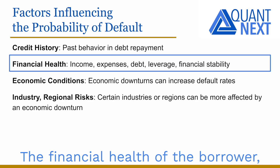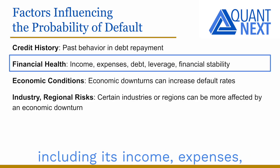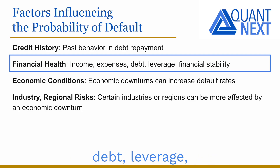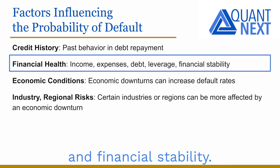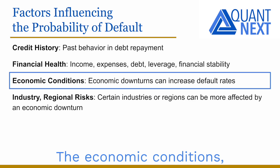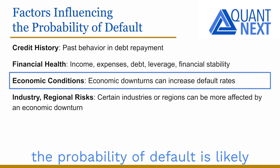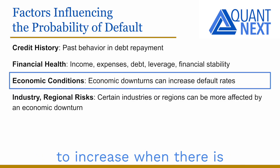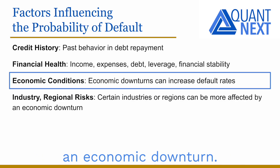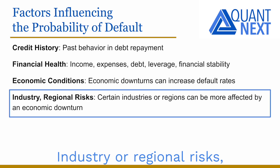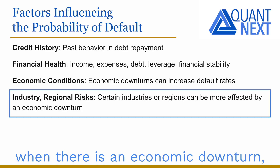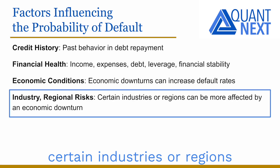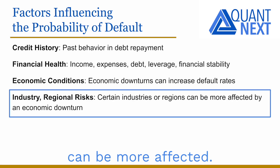Other factors include the financial health of the borrower, including its income, expenses, debt, leverage, and financial stability. Economic conditions also play a role — the probability of default is likely to increase during an economic downturn. Additionally, industry or regional risks matter, as certain industries or regions can be more affected during a downturn.